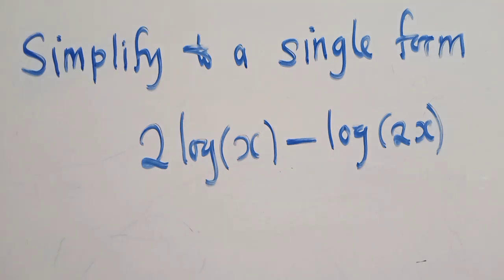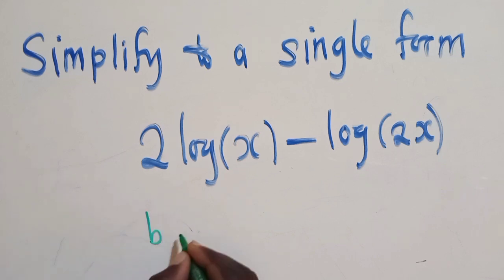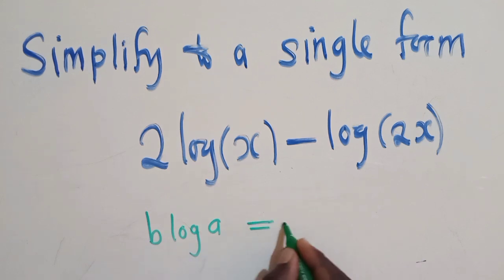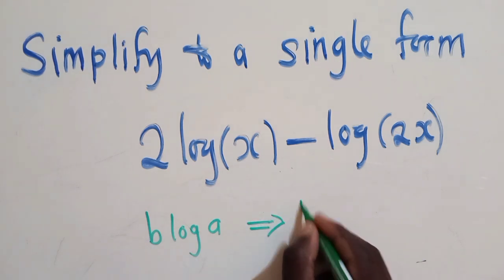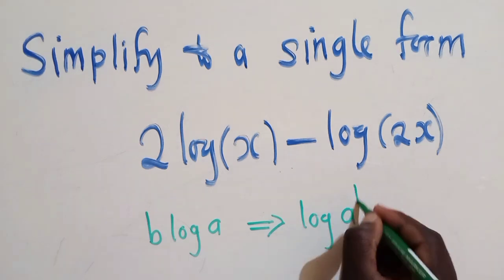Now, before we work it out, we need to understand some very basic properties of logarithms. When you've got B log of A, using the property of logs, this can be written as log of A power B.